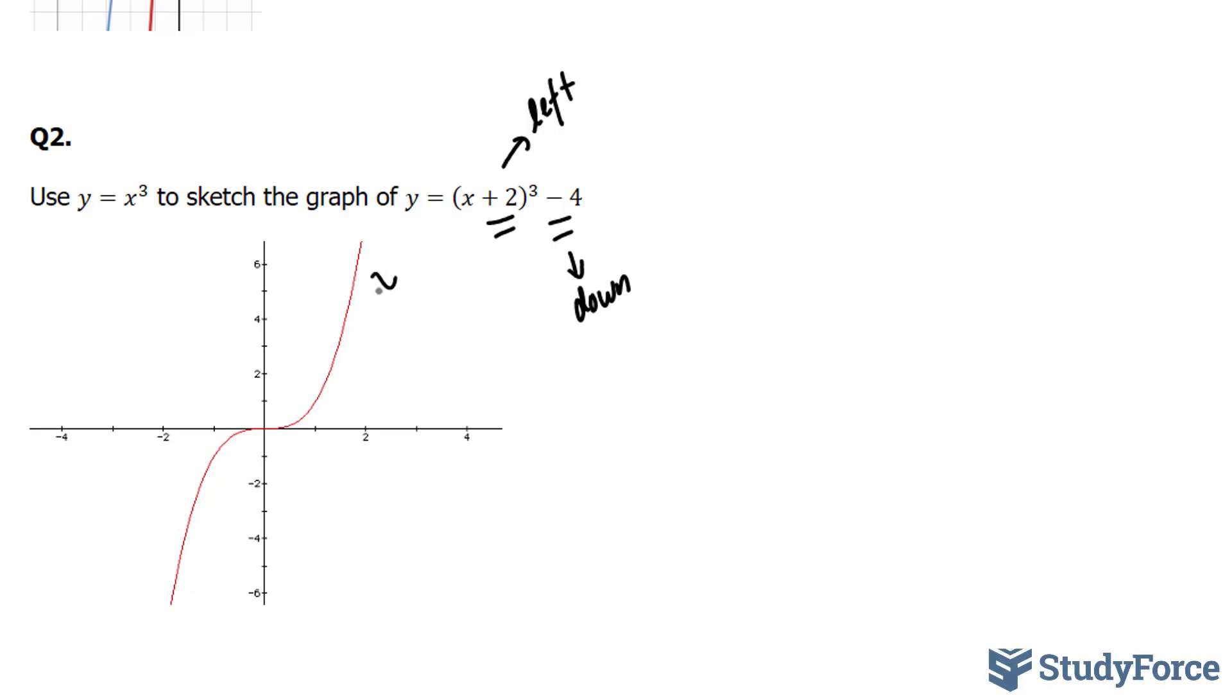This curve right here represents x to the power of 3. We're going to shift to the left, so this point right here becomes minus 2. This point right here becomes negative 1. This point right here becomes negative 3, and you end up with a curve like this. Now this is only taking into account the left and the right shift.